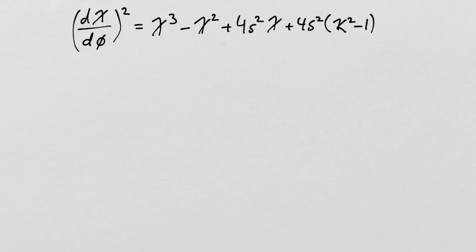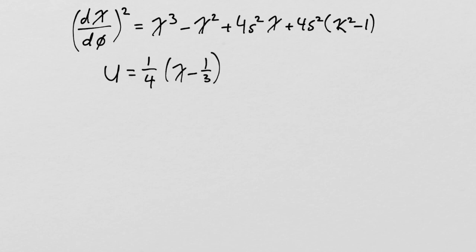Let's actually try to make progress on the solution. We're not going too far right now, but there's one technique from the history of the cubic equation that will get us quickly to something that can be understood as a solution. Nothing's easy — it involves another substitution. We create a new variable capital U.